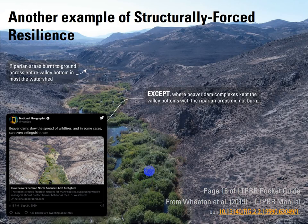Another compelling example of structurally forced resilience is the disturbance of fire. Here's an example of a riverscape expressing the phenomenon that water doesn't burn. If you wet up those valley bottom sponges, they can provide wildlife refugia, and in some places, if wide enough, actual fire breaks, as well as resilience to post-fire runoff. This has been highlighted in Emily Fairfax's work that appeared in National Geographic.